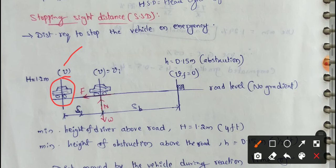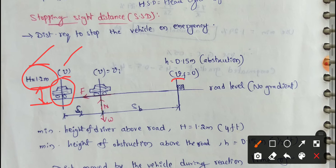For this vehicle, the driver's eye height above the road surface is 1.2 m, indicated as capital H. The height of the obstruction above the road is h = 0.15 m.